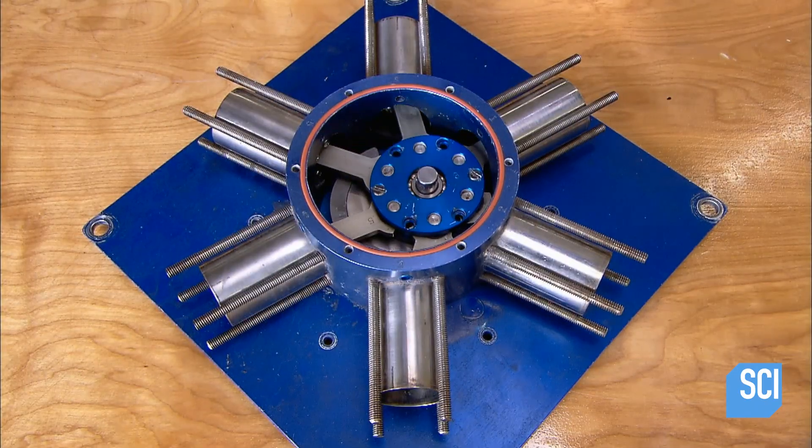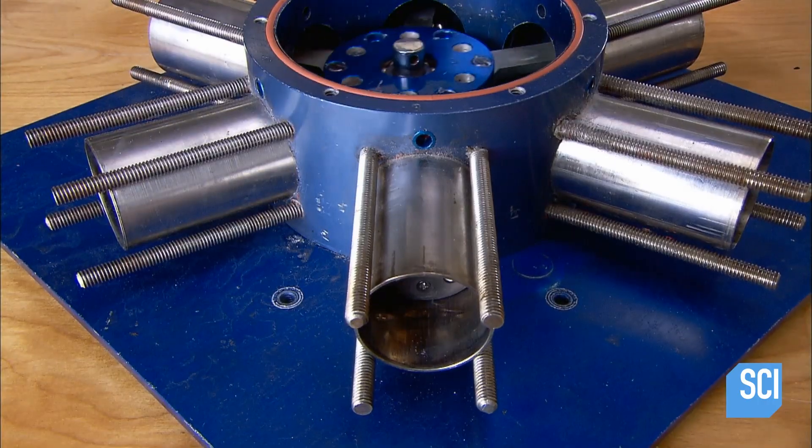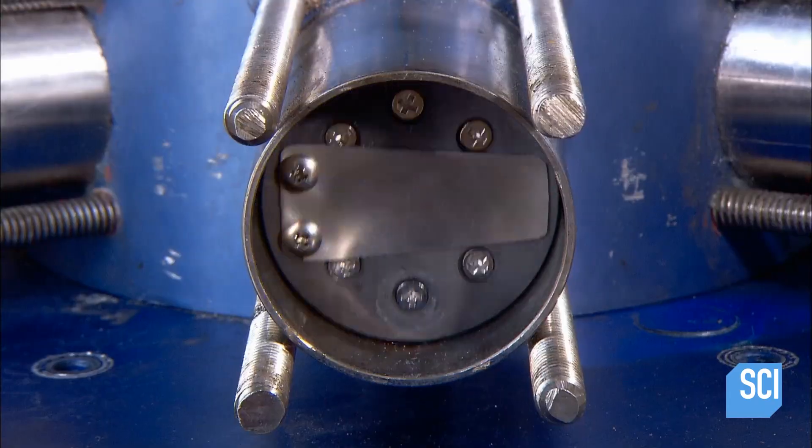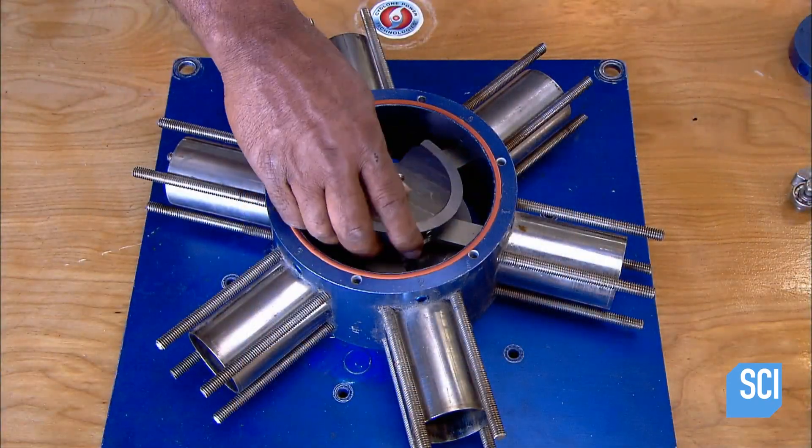Unlike a traditional car engine with cylinders arranged in line, these cylinders are in a radial configuration and therefore equidistant from the center. This prevents the engine from warping under high temperatures.